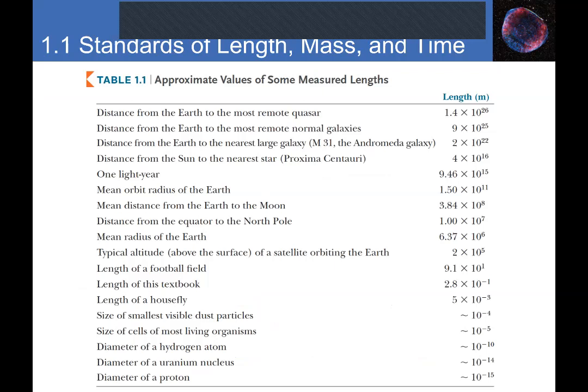Meters aren't commonly used in everyday life in the United States — we use miles, inches, and feet. But in academia and the military, meters are standard. To build intuition: an adult human is roughly 1.5 to 2 meters tall. A football field is about 91 meters — roughly 100 meters. A textbook is about 0.28 meters, a housefly about 5×10⁻³ meters.